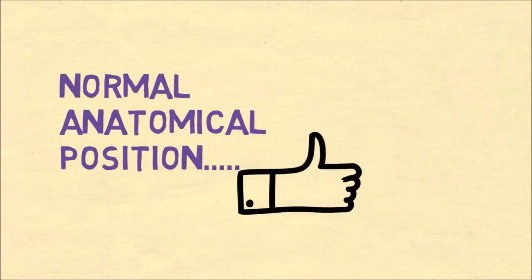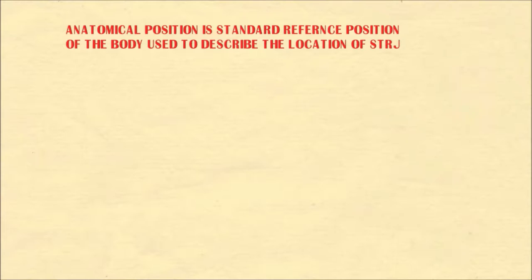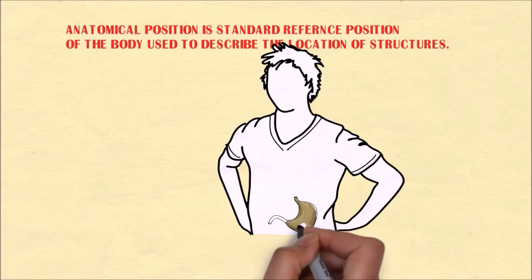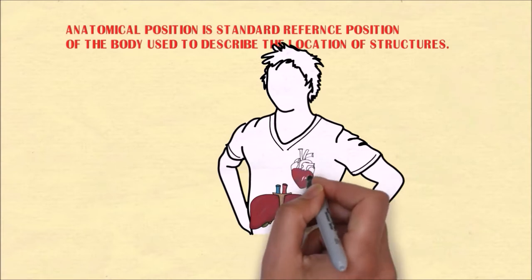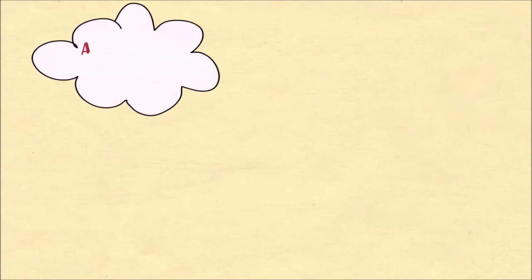So the next question should be: what is normal anatomical position? Anatomical position is a standard reference position of the body used to describe the location of structures — it could be the location of the stomach, liver, or the heart.